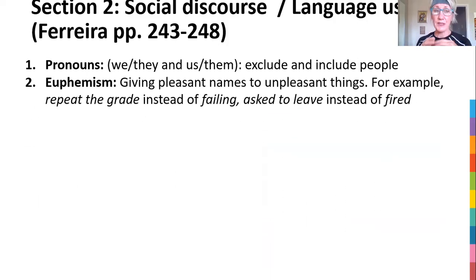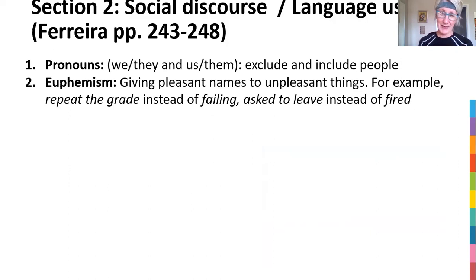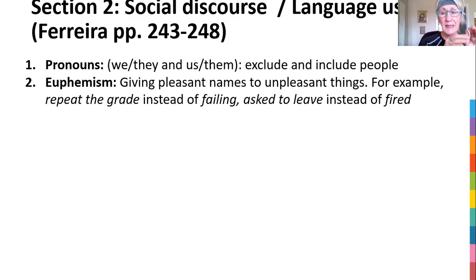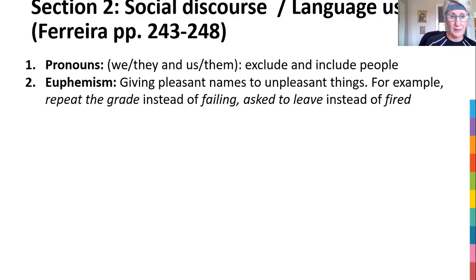Euphemism is another way for social discourse — when we use language that says something that is not so nice in a nicer way. We don't say someone has failed; we say they're repeating the grade. We don't say someone was fired; we say they've been asked to leave. So are there any euphemisms, and what is the effect of using the euphemism on the message? Coming to COVID — 'dying of COVID' versus softer language — one's more direct, one's more subtle, and you have to look at the impact on the message.